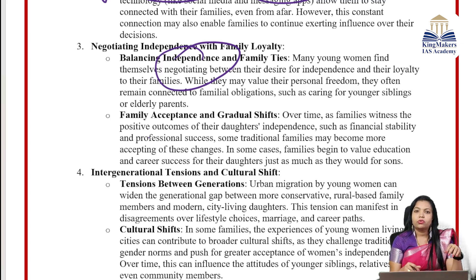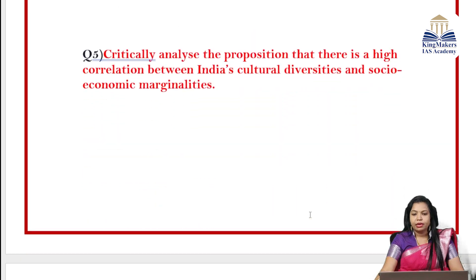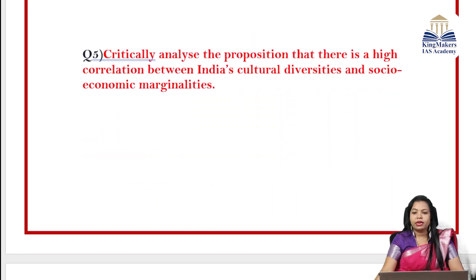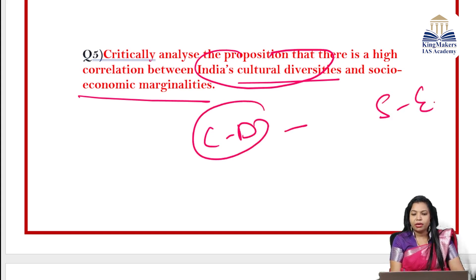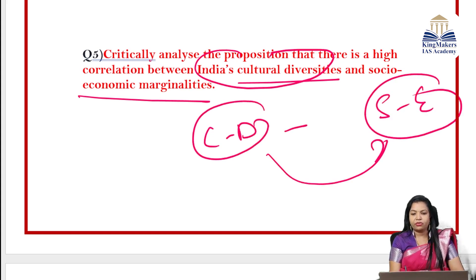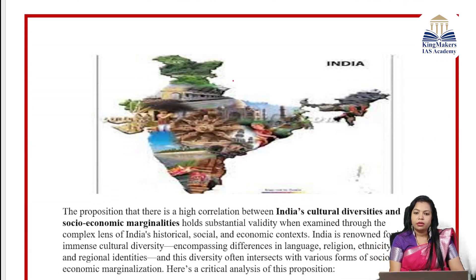Eighth question — from social justice: Despite comprehensive policies for vulnerable groups promoting equity and social justice, why are underprivileged sectors still not fully benefiting? Issues with affirmative action. Decode the question carefully: why are these policies not reaching the vulnerable sections? First, introduce what affirmative action is — a form of positive discrimination done to uplift marginalized groups through policies and programs. You can give the definition or cite a recent committee report.